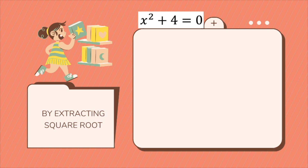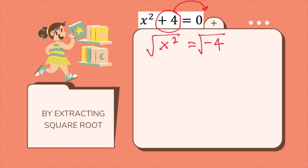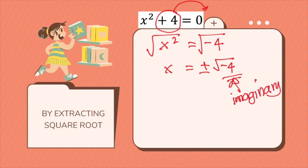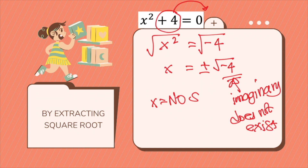Now let's have our last example. You have plus 4, so transfer it to the other side: x squared equals negative 4. When you take the square root, you get x equals plus or minus the square root of negative 4. This is what we call an imaginary number, which means that the square root of a negative number does not exist. Therefore, our x here will be no solution.